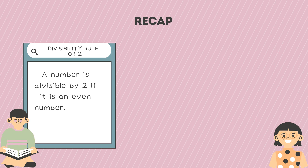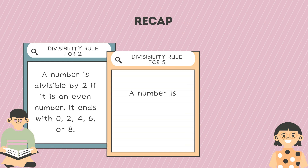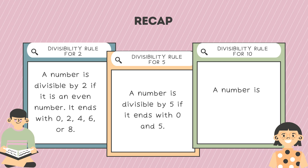It ends with zero, two, four, six, or eight. The divisibility rule for five: a number is divisible by five if it ends with zero or five. The divisibility rule for ten: a number is divisible by ten if it ends with zero.